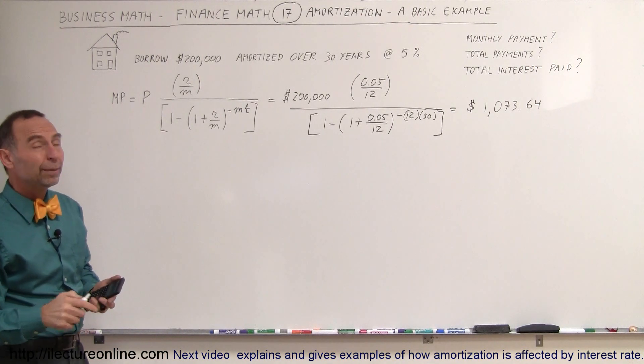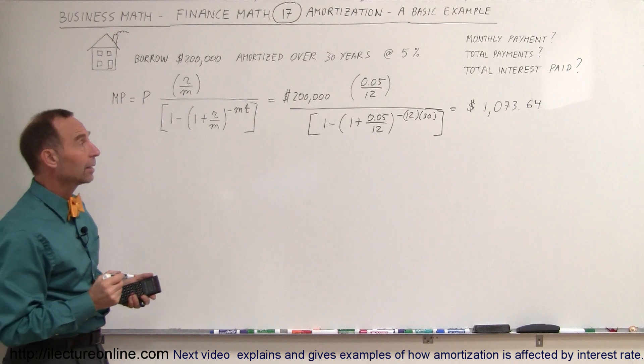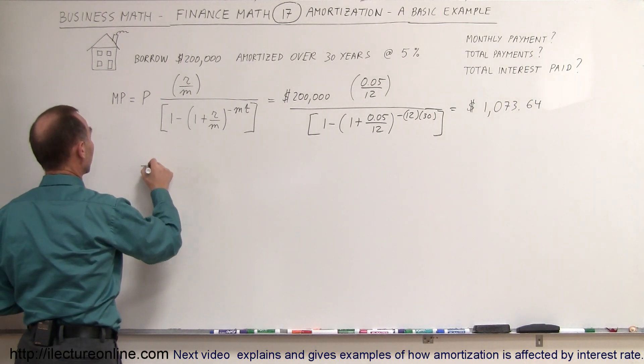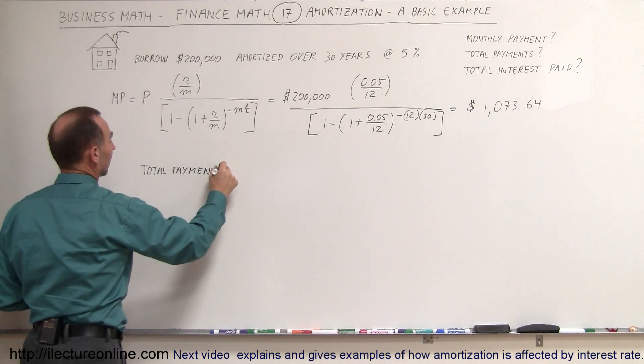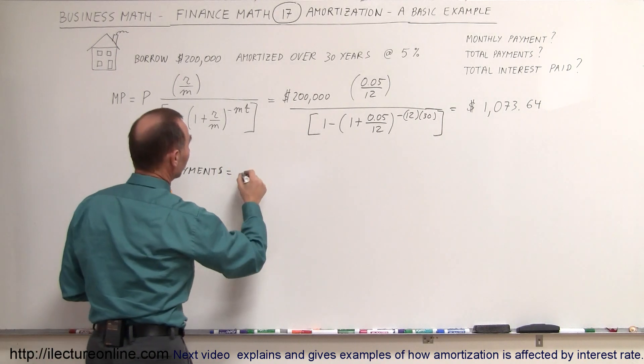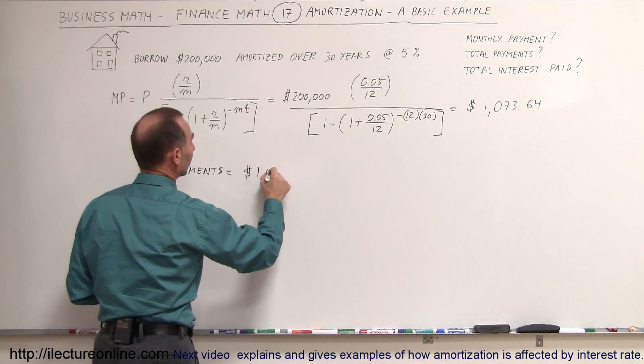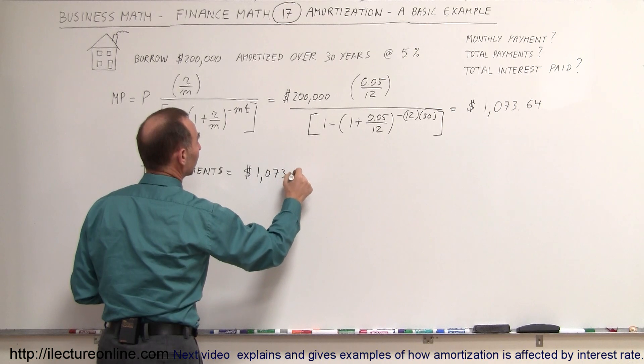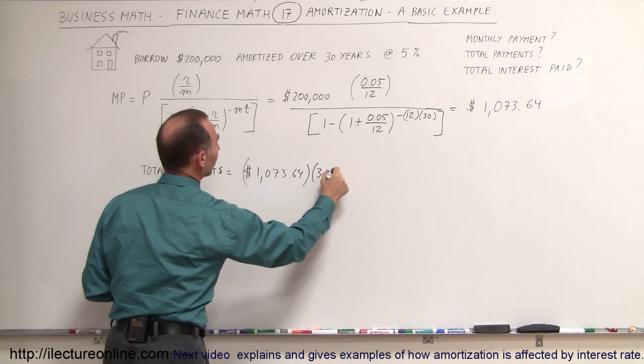Now, what will be the total number of payments that we make? The total payments, well, total payments, is equal to the single payment of $1,073.64, multiplied times 360, because that's how many payments you will make.